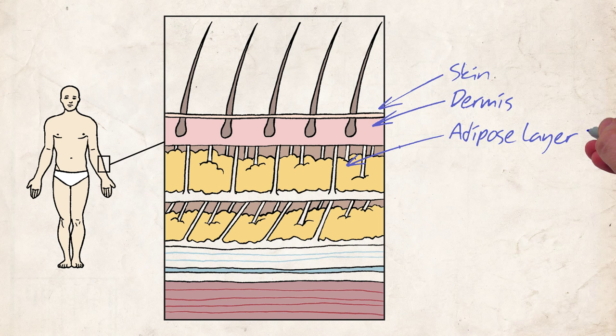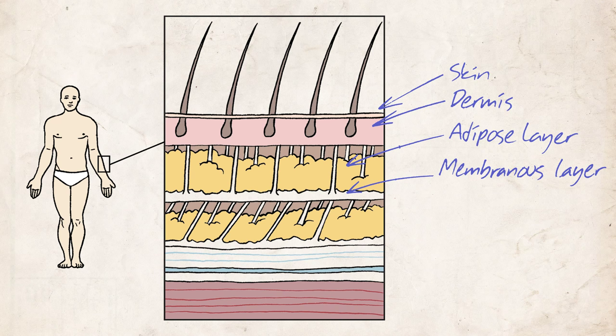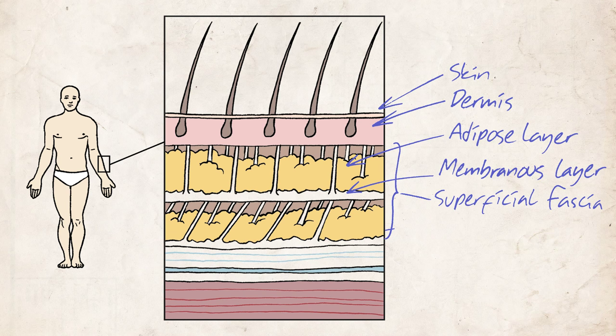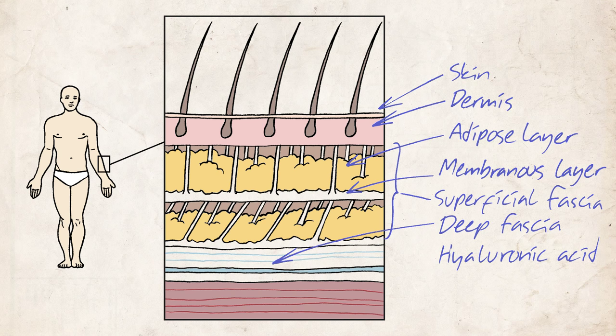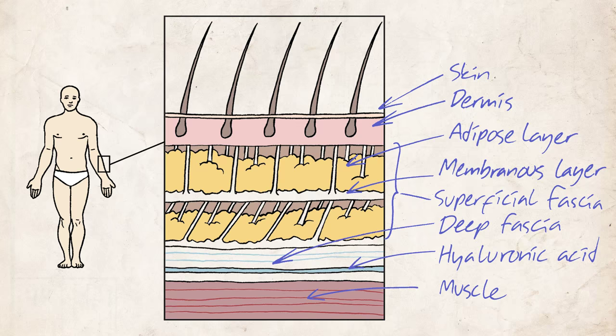Under superficial fascia lays deep fascia, which has a composite structure forming two or three layers of parallel bundles of collagen fibers. Each layer is separated from the adjacent one by a thin layer of loose connective tissue. This system allows the layers to slide on one another.